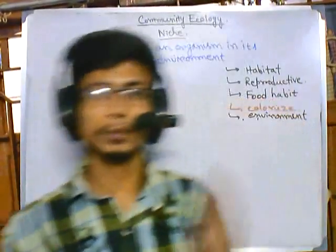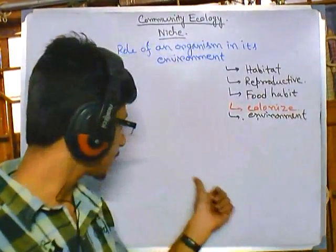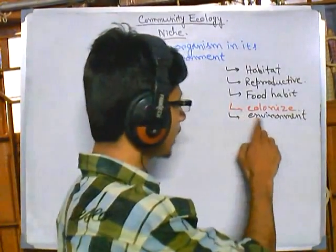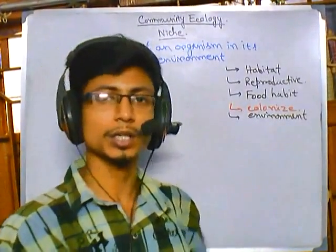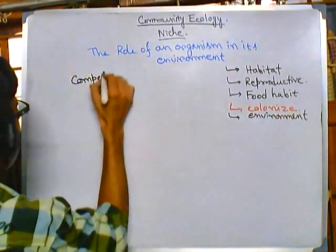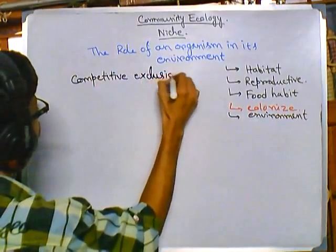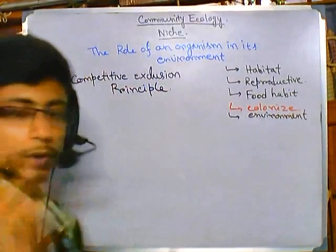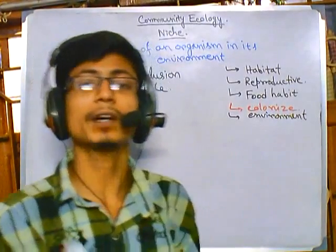Welcome back. We are talking about community ecology. We have discussed about niche, fundamental and realized niche, and the concept of niche. No two species can exist in the same niche, and this is called the competitive exclusion principle. This is very important — the competitive exclusion principle states that no two species can coexist in the same niche.